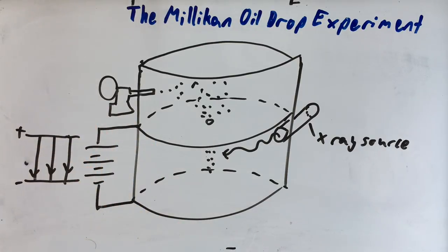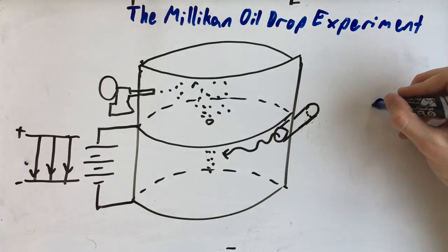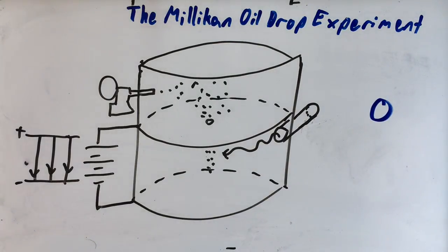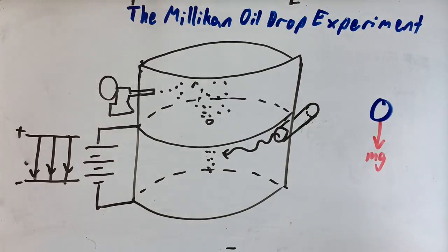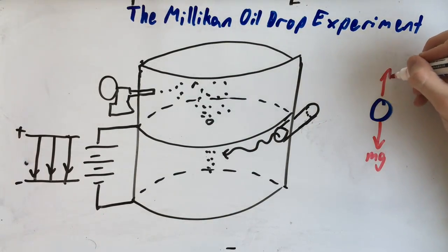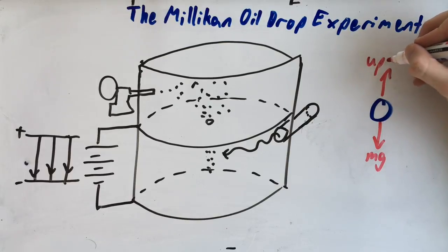So what happens? As the oil droplets fall, they have two forces acting on them. They have their weight downwards and up thrust, which is very small.